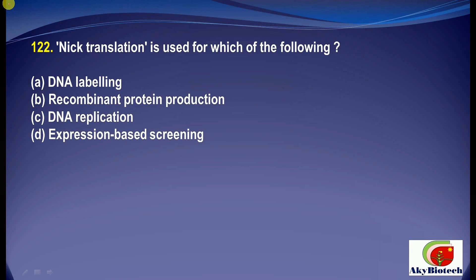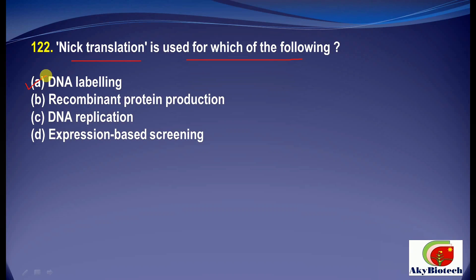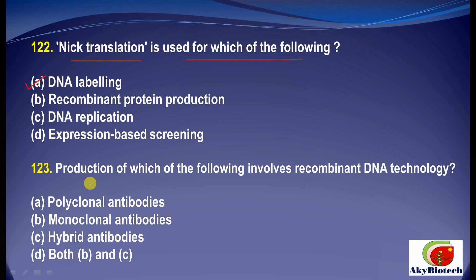Question 22: Nick translation is used for which of the following? Nick translation is used in case of DNA labeling. Note: all these questions are very important — they are mixed questions from all topics and have been asked many times in the examination, so kindly take a quick revision. Question 24: Production of which of the following involves recombinant DNA technology? The correct answer is hybrid antibodies.